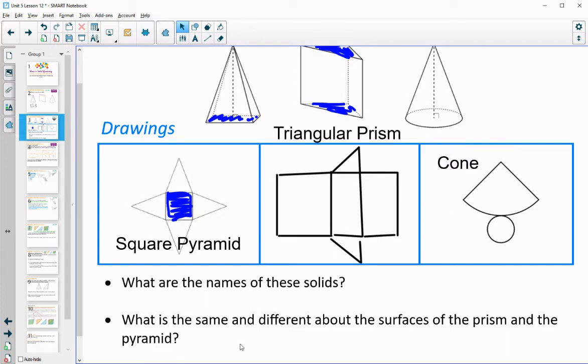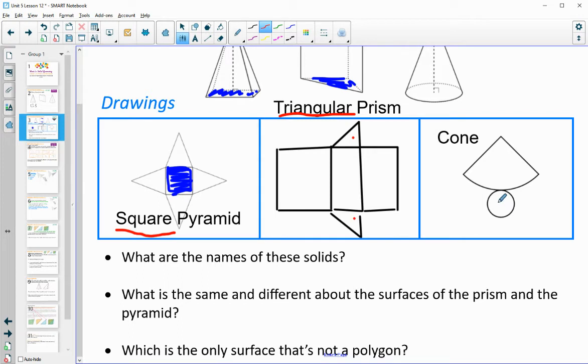So what is the same and different about the surfaces? These first two were made up of triangles and rectangles. But the pyramid just had the one square base, so the base shape was only there once, versus the prism where the triangle was there twice. Sides were triangles here; the sides around the middle were rectangles. And then the cone has a circular base. So what's the only surface that's not a polygon? That would be the circle. Both of these are not polygons because they have curves. Polygons can't have curves.